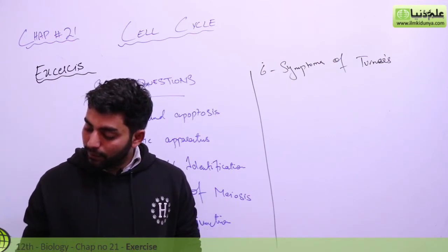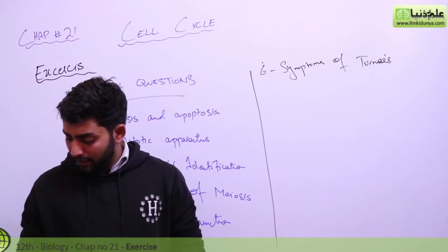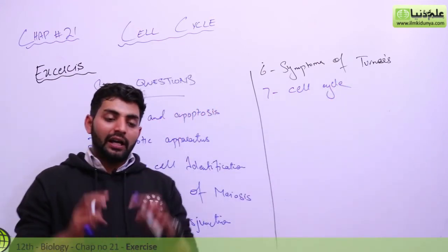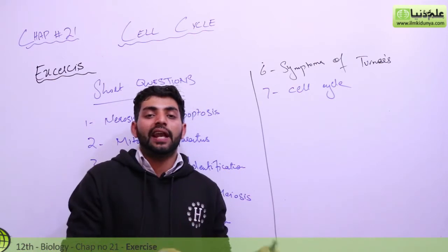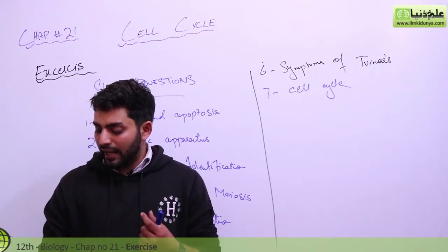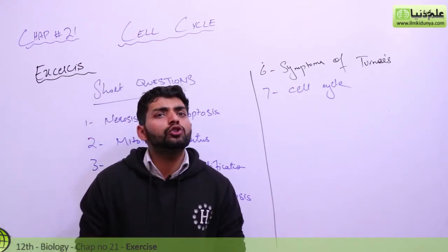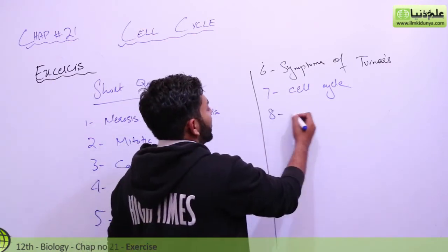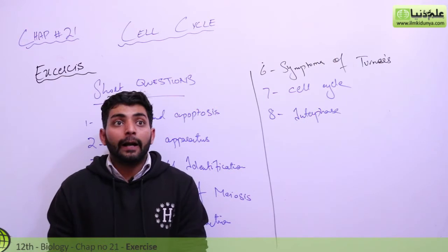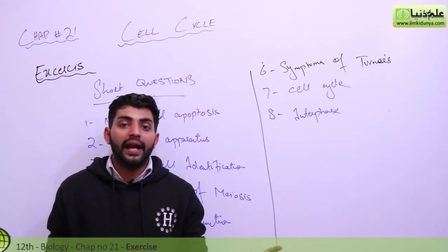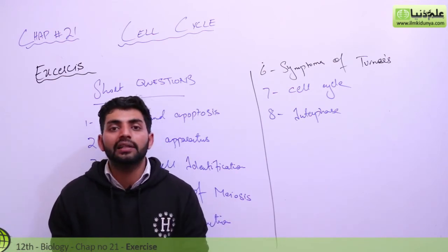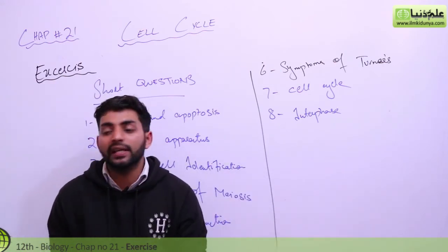Seventh question: what is the cell cycle? The cell cycle is the whole series of events and chemical reactions occurring in cell division — it is called the cell cycle. Eighth question: is interphase a resting phase? Interphase is not a resting phase; it is misleadingly called a resting phase. Interphase includes G1, G2, and G0 phases, and the cell is still metabolically active.